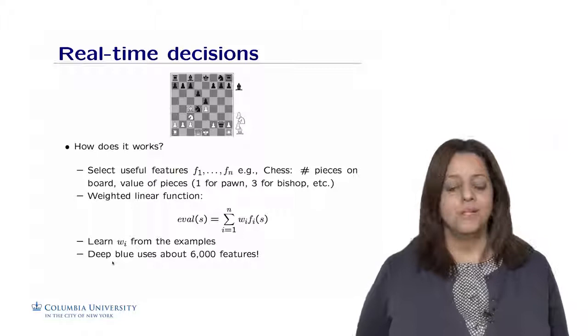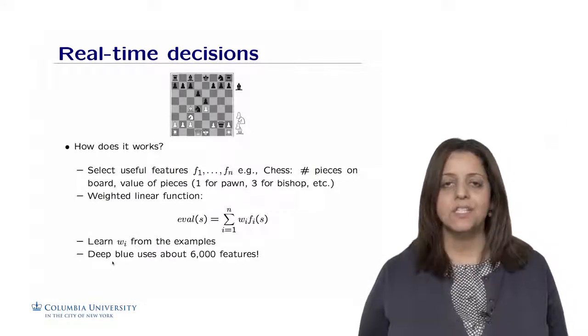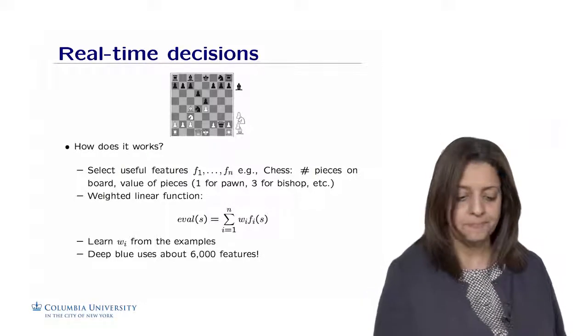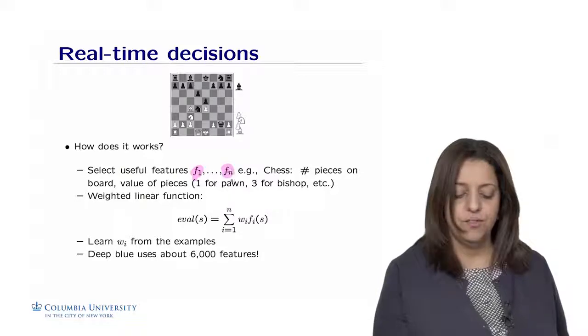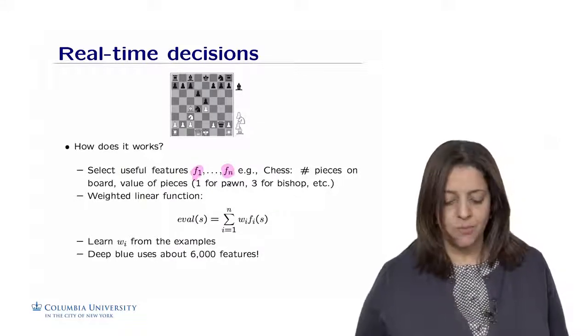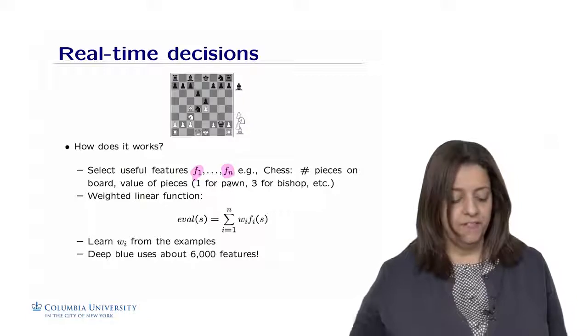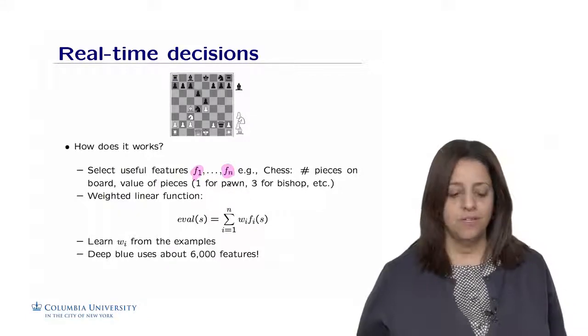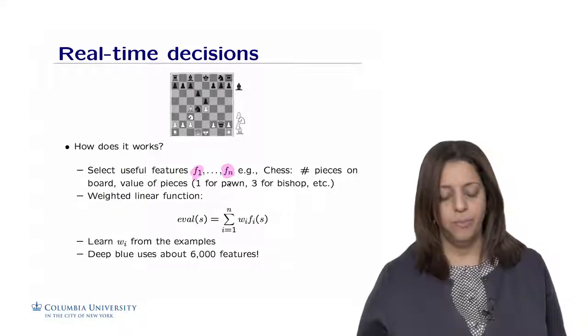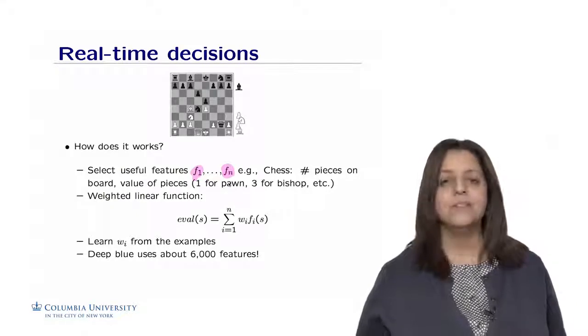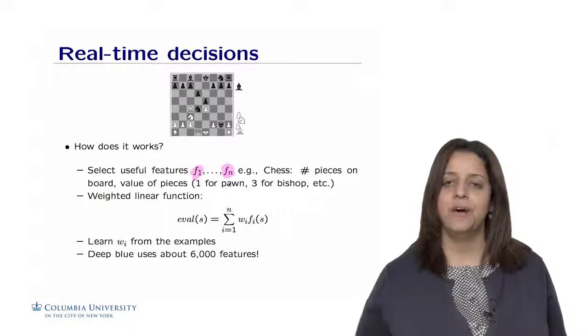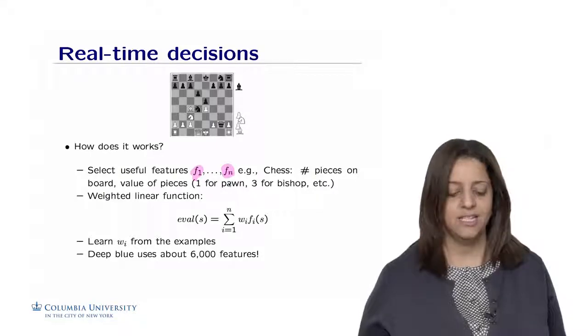So how does it work? So for chess, for example, select first some useful features. So let's call them F1, F2, Fn. For example, for chess, we could take the number of pieces on the board. Feature 2 could be, for example, the values of one piece, like pawn, one for pawn, three for bishop, etc. So we could devise, using domain knowledge and our long-term experience playing chess, all kinds of features that we could put together using a weighted linear function.